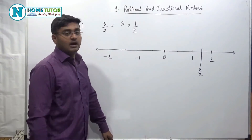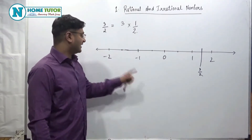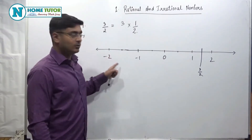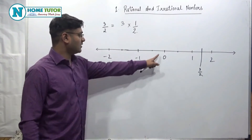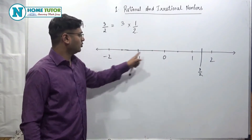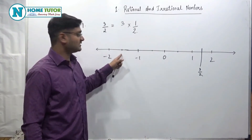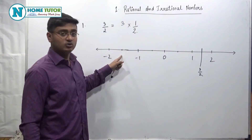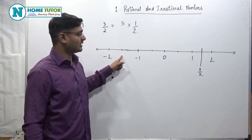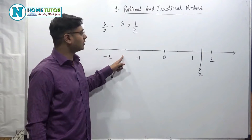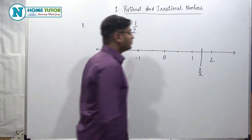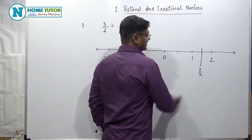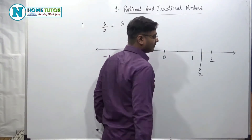Now, if I have to plot minus 3 by 2, then it is here on the negative side. How? Count 1, 2, and this is the 3rd point. So this is my minus 3 by 2. If I have to plot it and check, is it really 3 by 2?